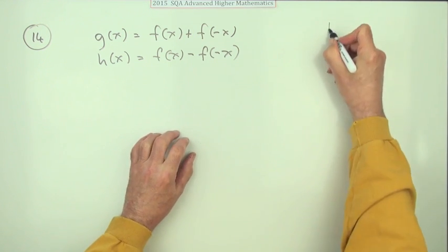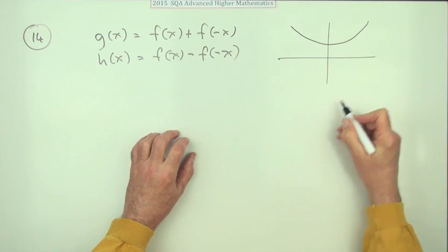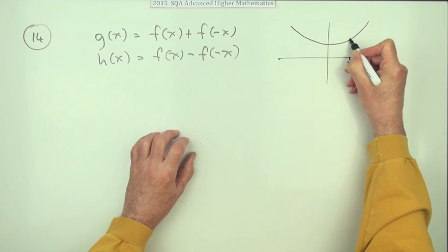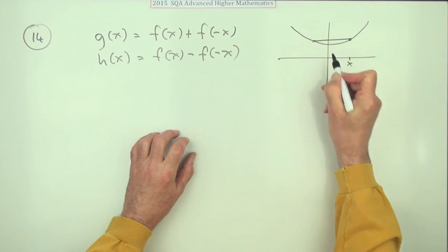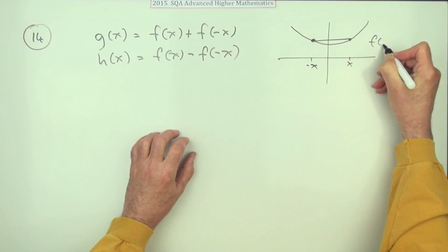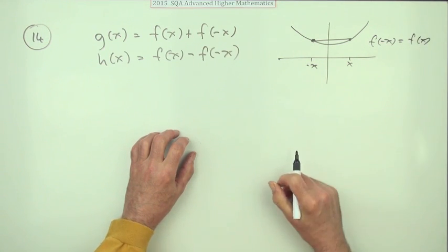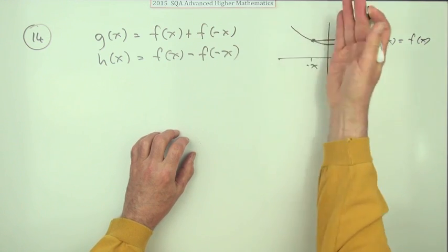Well, an even function means that the value at x is the same as the value at negative x. So f of negative x is the same as f of x. In other words, it's symmetrical about the y-axis.